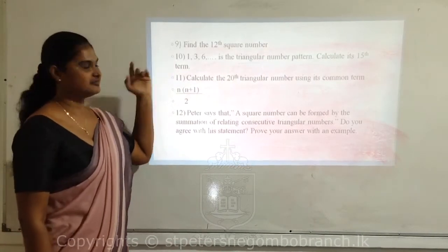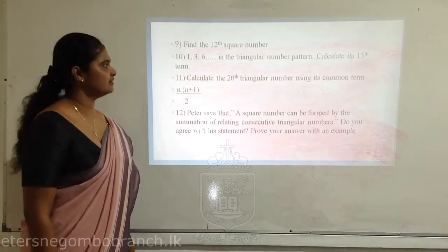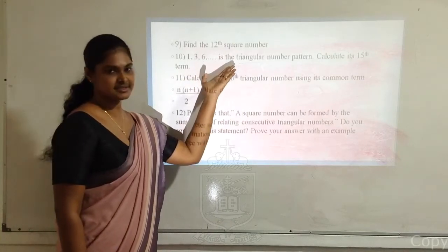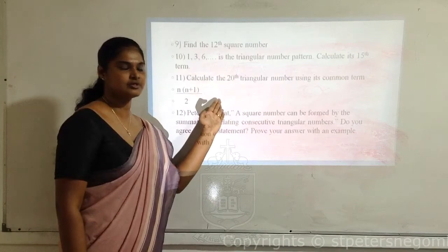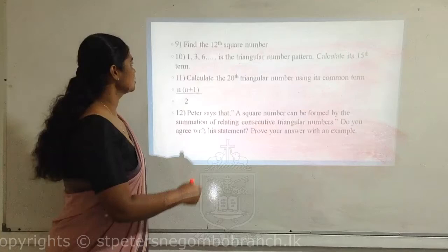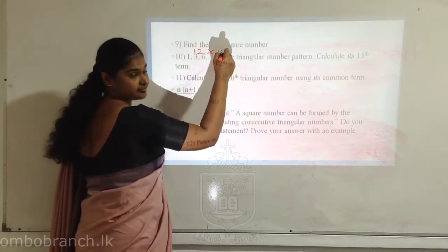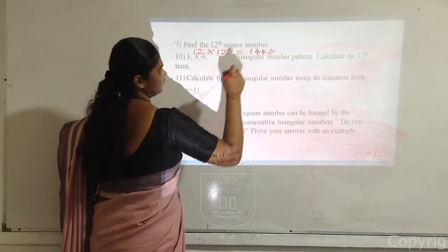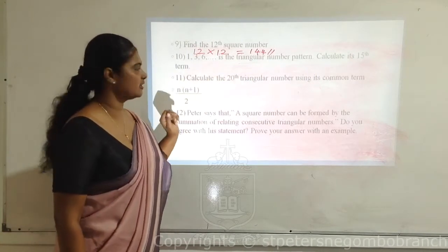Let's go for the exercise. Find the twelfth square number. Square numbers are formed by multiplying the same number of rows by the same number of columns. So for the twelfth square number, we multiply 12 by 12: the answer is 144. One hundred and forty-four is the twelfth square number.